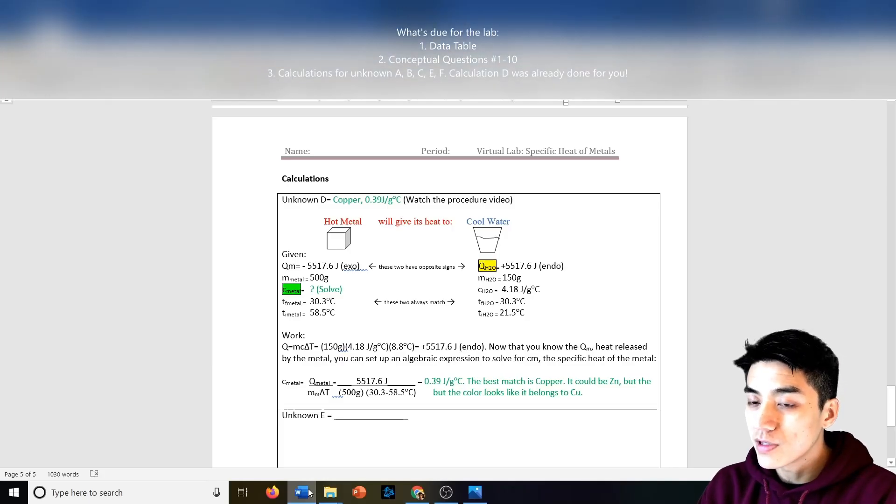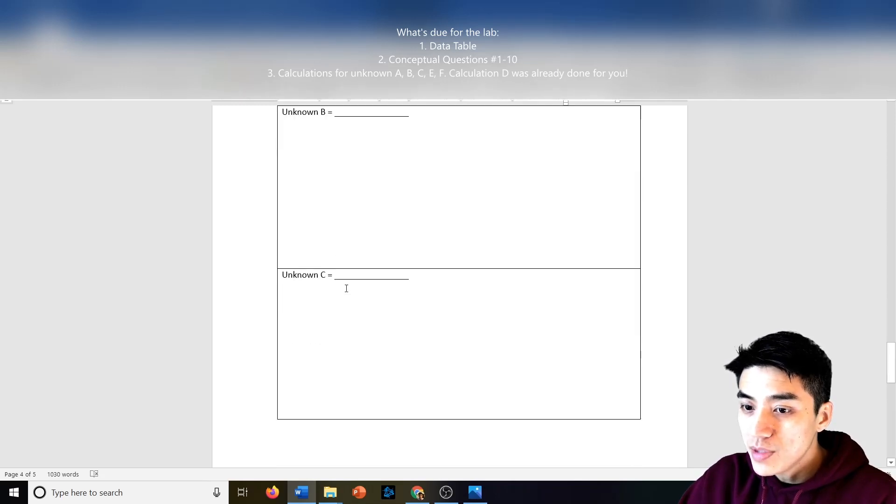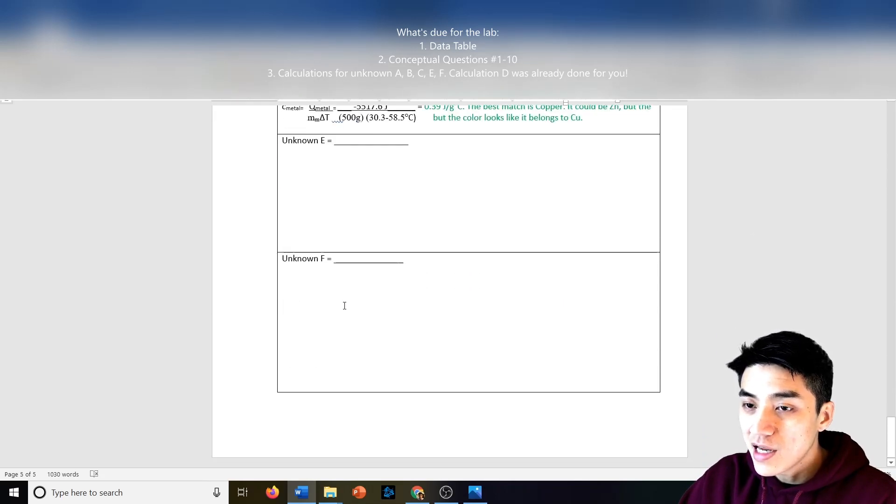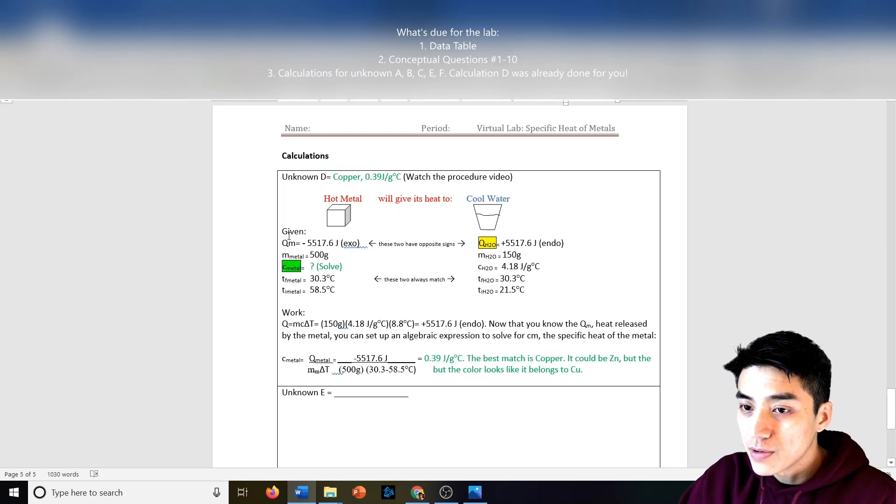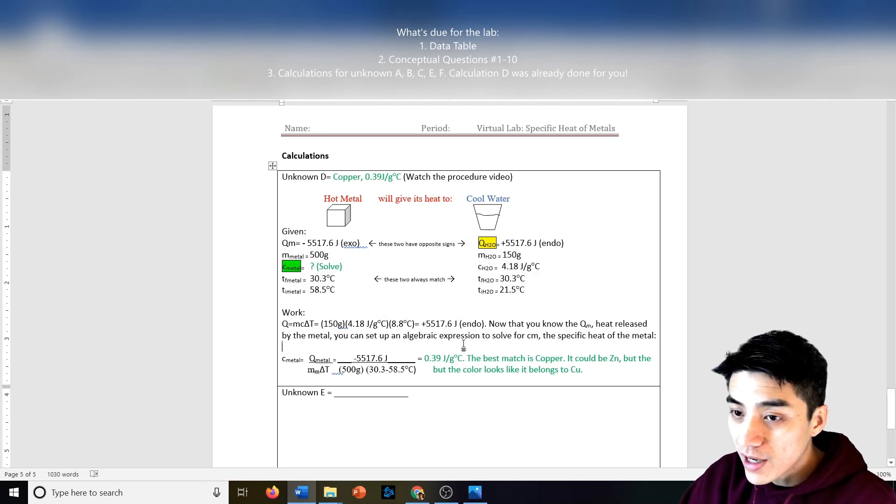So let's have a look at what's due for the lab. So like I mentioned before, I did calculation D for you. And this is typed in on the lab. So you can see here, we need to fill in boxes A, B, C, E, and F. So the other five samples. So you can either type in your work or write it out by hand directly onto this document and then just send the photos back.